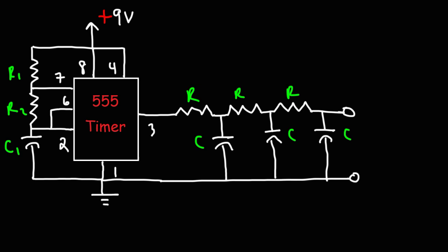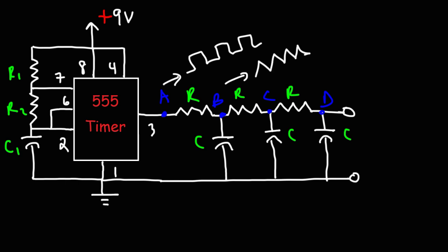Let's put everything together. What we have here is the 555 timer circuit, which can help us create a square wave at point A. Pin 3 is the output pin of the 555 timer. We label point B, point C, and point D. If we choose the appropriate values for R1, R2, and C1, we can get a nice square wave at point A, a good triangular wave at point B, and a sine wave with a reduced amplitude at point D — though you may need to connect that to an amplifier if you want to do something useful with it.